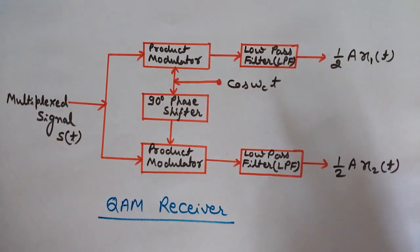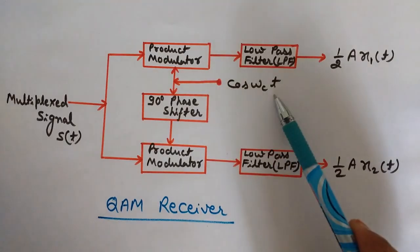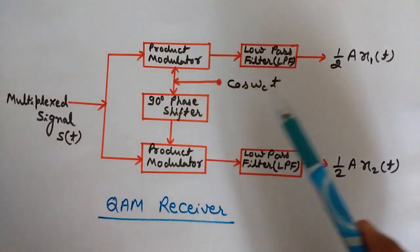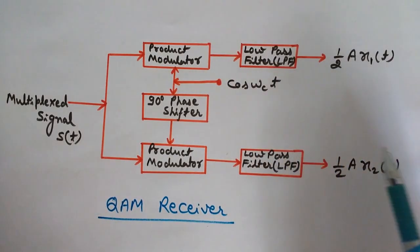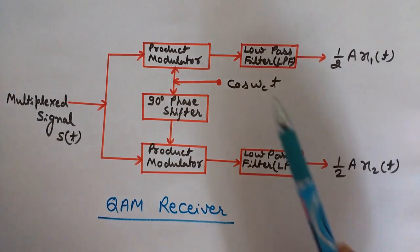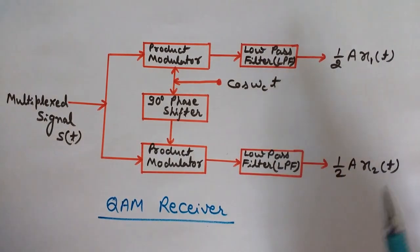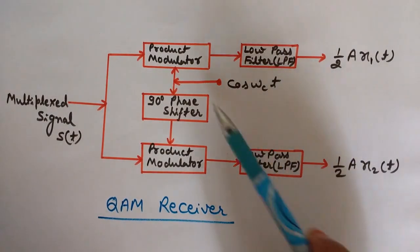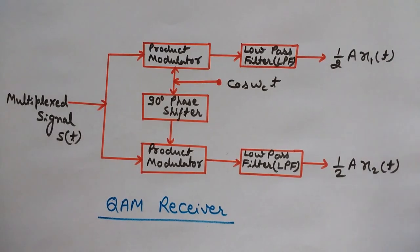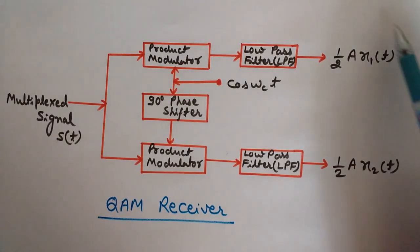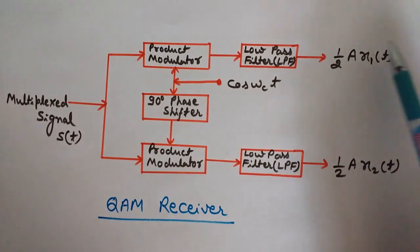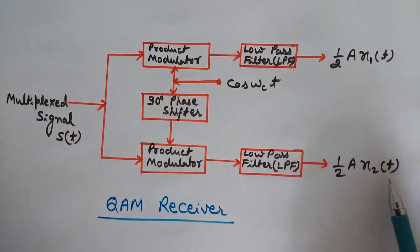An important condition here is that the carrier wave cos(ωc·T) used at the receiver — the local oscillator — and the oscillator used at the transmitting end must be in coherence; they should be in the same phase. This is the coherence condition. In this way, we again get the original modulating signals back at the receiving end.